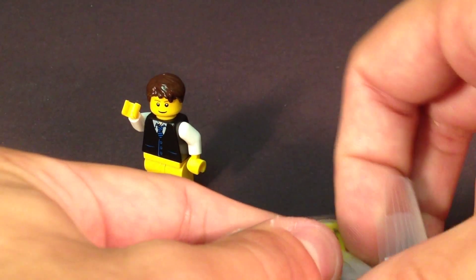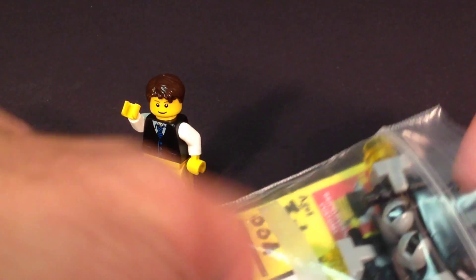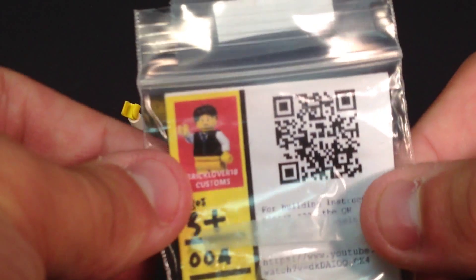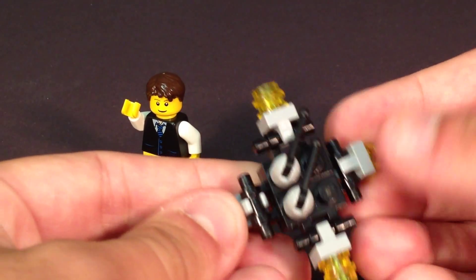It comes in this package with all the pieces taken apart so that you can build it yourself and it has the instructions available on this QR code inside of the package. If you use that QR code shown right here, you can build it for yourself online and this is how I got it built.